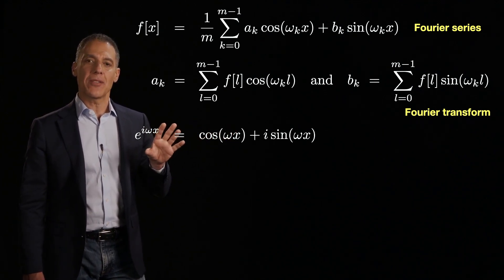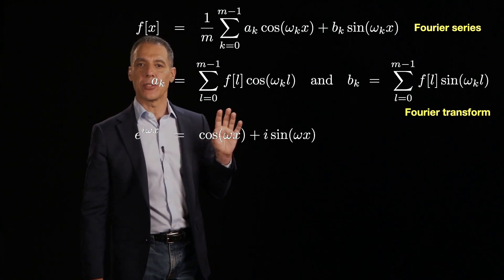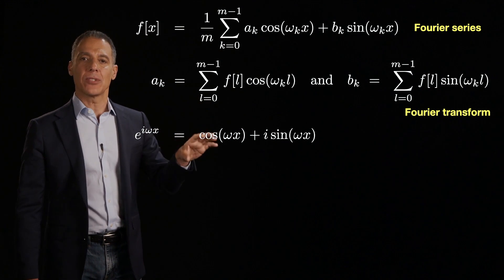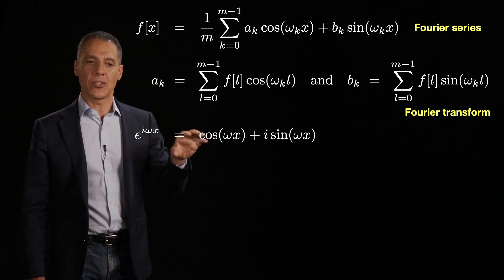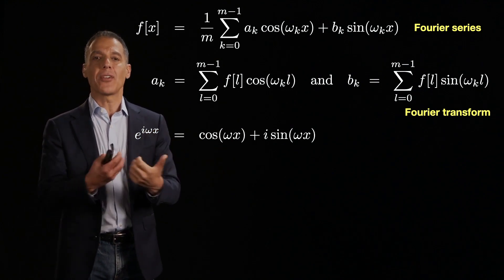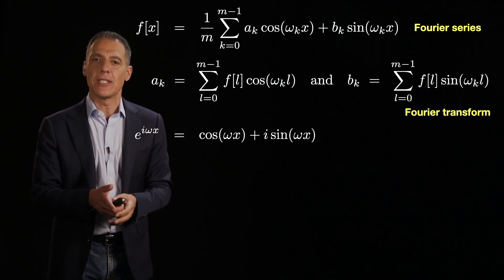And I will be the first person to admit that this trips people up quite a bit. But in the same way that I ask you, whenever you hear Fourier series and Fourier transforms, think I'm representing something in terms of sines and cosines. When I say the complex exponential, which is e^(iωx), think we're just bundling up cosines and sines.